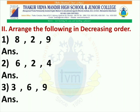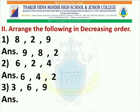In exercise 2, you have to arrange the following numbers in decreasing order. In set 1, we have 8, 2, and 9. After changing it into decreasing order, we get 9, 8, and 2. In set 2, we have 6, 2, and 4. When we change it into decreasing order, we get 6, 4, and 2. In set 3, we have 3, 6, and 9. After changing it into decreasing order, we get 9, 6, and 3.